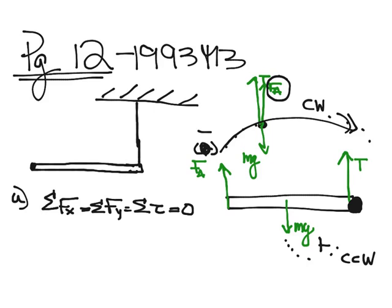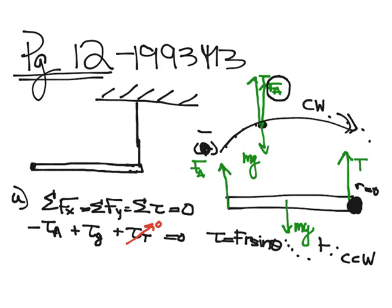Now I'm going to use sigma tau equals zero. So I have tau A, which I know is negative, plus tau for gravity, I'm going to call it tau G, plus tau from the tension equals zero. But since in general, torque is equal to F R sine theta, and the distance from my tension force to my pivot point is zero, my torque for tension is zero. And I'm going to fill in my equation for torque. So I have minus FA RA sine theta A, plus FG RG sine theta G, equals zero.